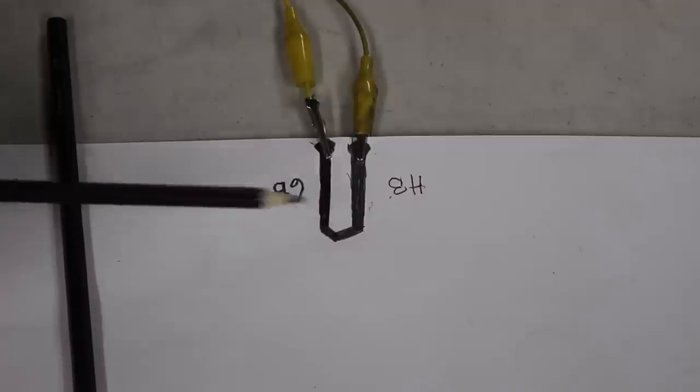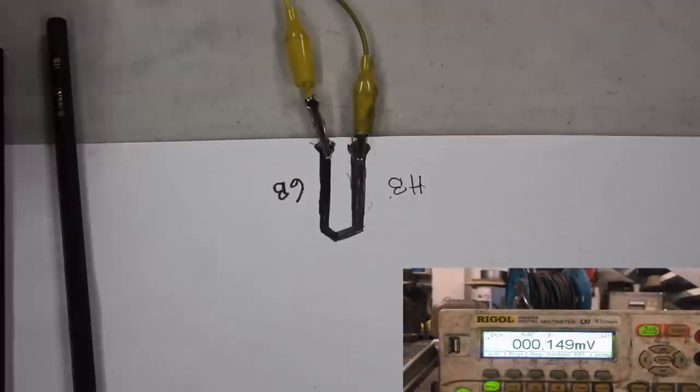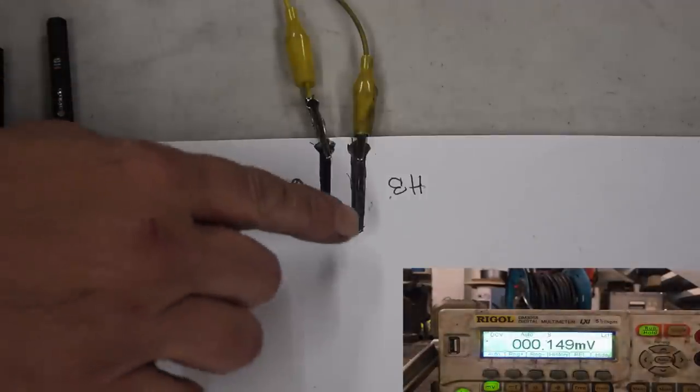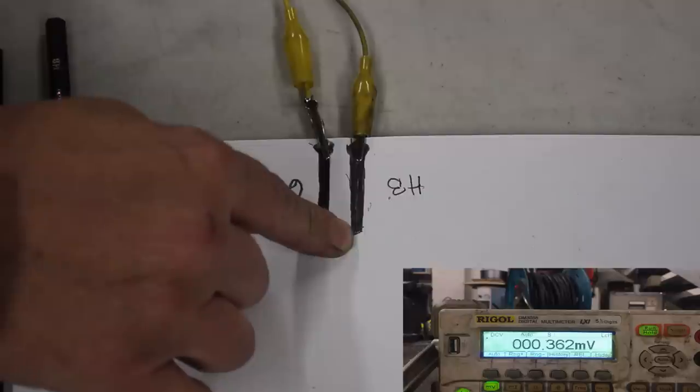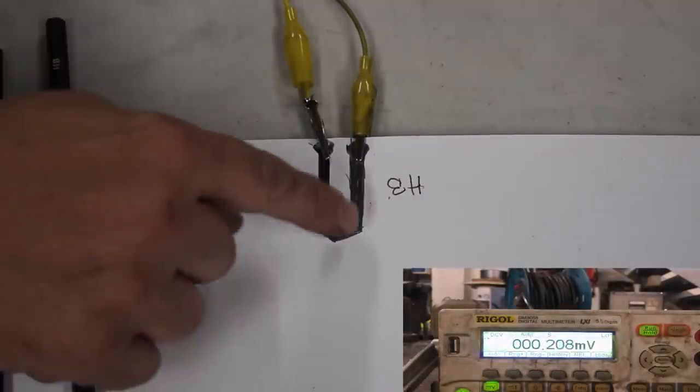That side is drawn with the 6B, little angle in it. That side is drawn with the HB, and they meet right at that point. We've got it reading volts on the meter - it's reading about 149 millivolts. Now watch what happens when I touch it with my finger. Here we go. Isn't that awesome? Take my finger off, put my finger on.